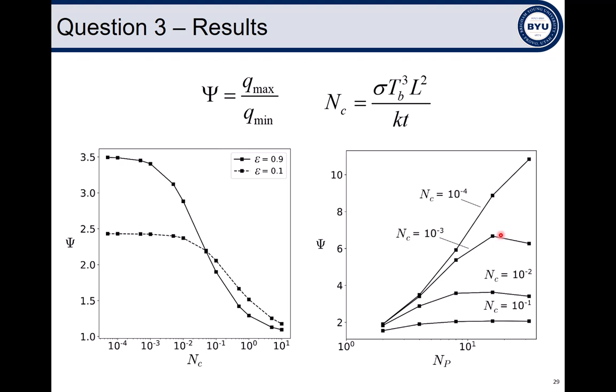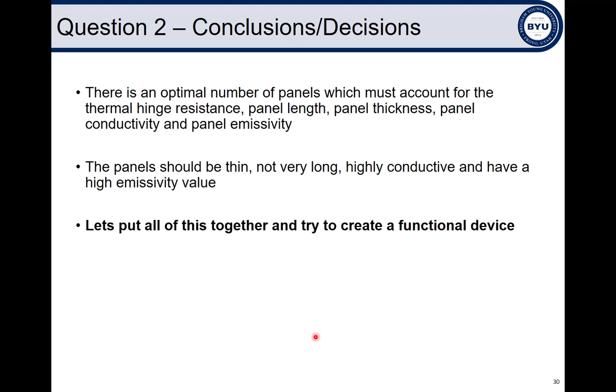This modeling work will be submitted to the International Journal of Heat Mass Transfer in a matter of weeks. To summarize, there's an optimal number of panels which must account for the thermal hinge resistance, the panel length, thickness, conductivity, and emissivity. We also want panels that are thin, but not too thin, not very long, highly conductive, and that have a high emissivity value.